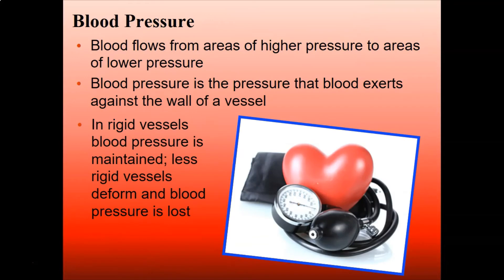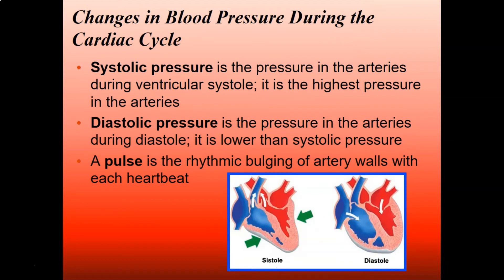So what is blood pressure? Blood flows from areas of high pressure to areas of low pressure, and blood pressure is the pressure that blood exerts on the walls of a vessel. With big rigid walls you can maintain blood pressure well, but with less rigid, smaller walls, you lose that blood pressure. As we learned in the cardiac cycle, systolic pressure is the pressure in the arteries during ventricular systole — when you're actually pumping — meaning pressure is very high in the arteries.